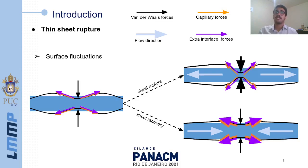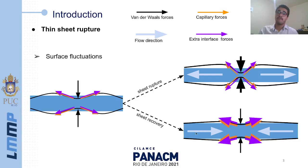If the liquid sheet is sufficiently thin, the presence of long-range intermolecular attraction between the free surfaces of the film may influence the evolution of the perturbation. The surface perturbation may grow due to the action of van der Waals forces until the liquid sheet undergoes rupture, or the growth of the perturbation may be damped by capillary forces and extra interface forces that oppose the van der Waals forces. In short, the rupture process occurs due to the drainage of liquid from the perturbed region, leading to the thinning of the film, characterized by an outward flow. This thinning process increases the influence of the van der Waals forces on the rupture dynamics.